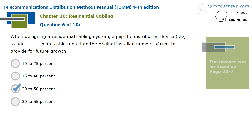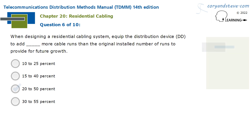When designing a residential cabling system, equip the Distribution Device, or DD, to add 20-50% more cable runs than the original installed number of runs, to provide for future growth.